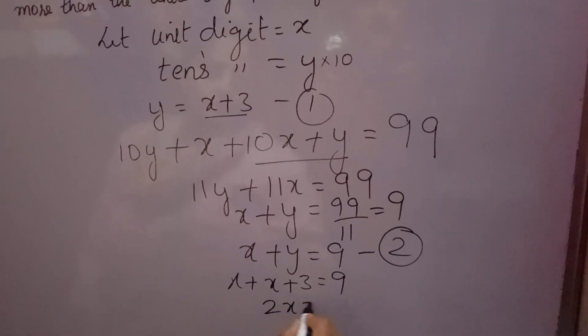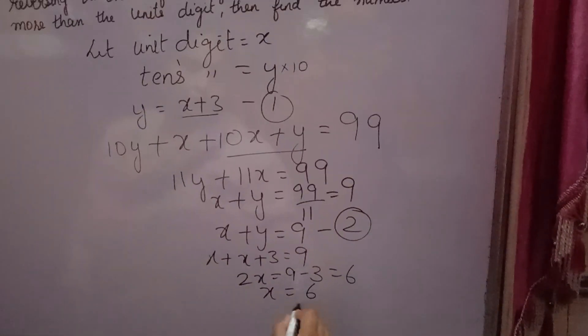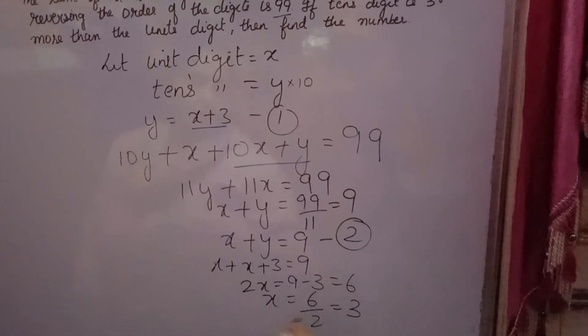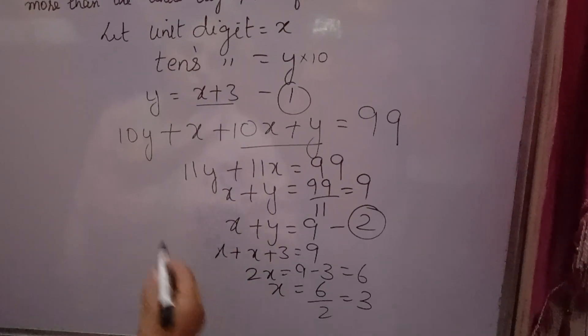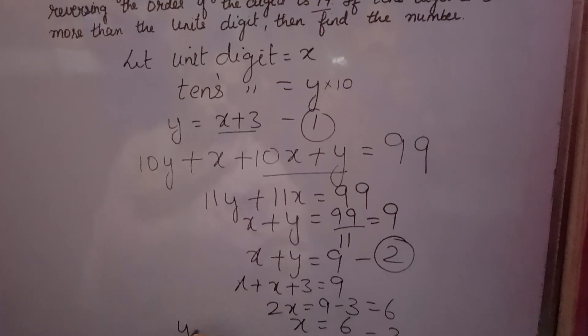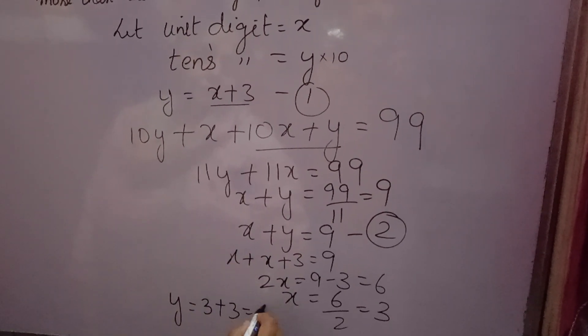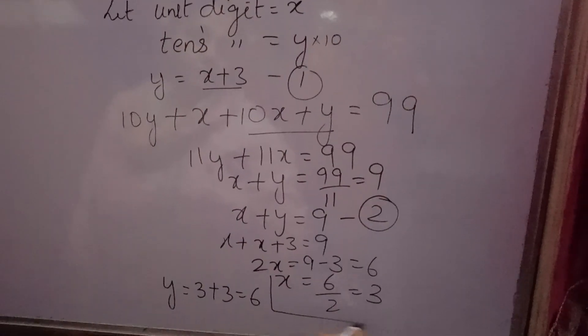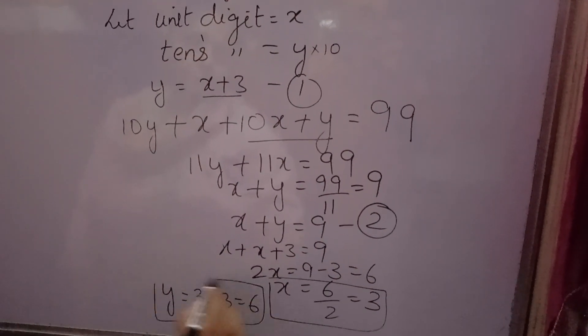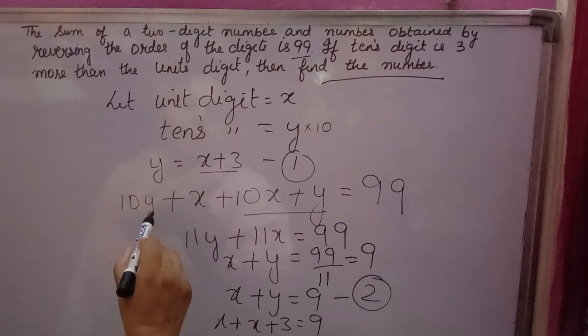Substituting y equals x plus 3 into x plus y equals 9 gives x plus x plus 3 equals 9, so 2x plus 3 equals 9. Therefore 2x equals 6, and x equals 3. The y value is 3 plus 3, which equals 6.